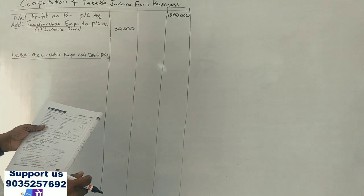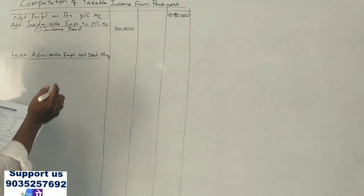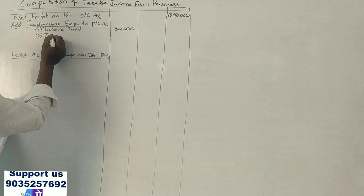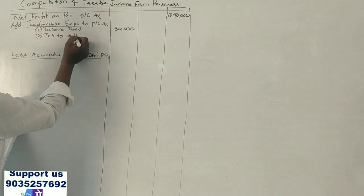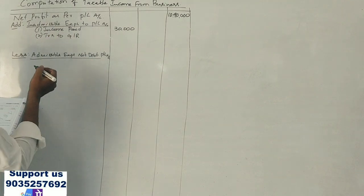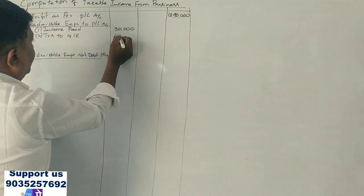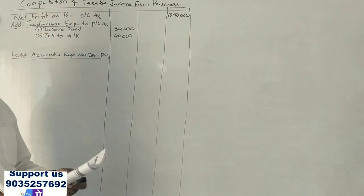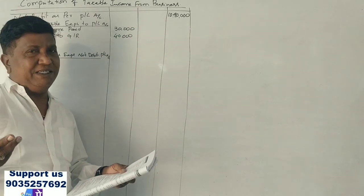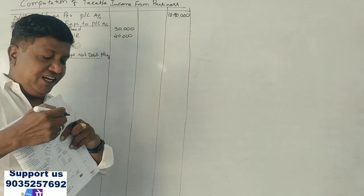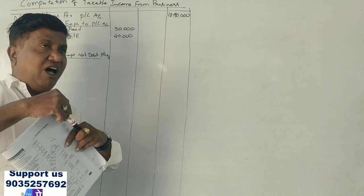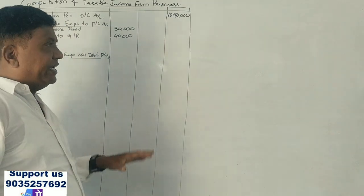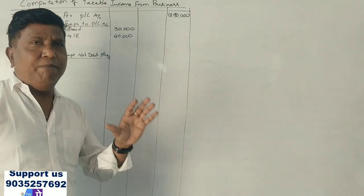Next is the transfer to general reserve — this is also an inadmissible item. Then there is the loss of subsidiary company. What is the loss of subsidiary company?